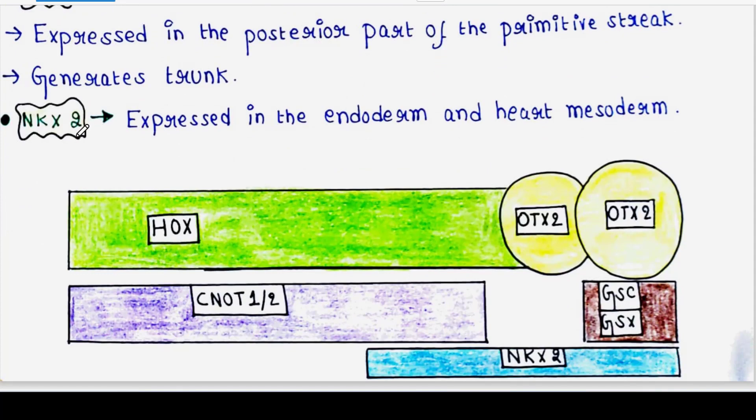Next is NKX2. This is expressed in the endoderm and heart mesoderm.